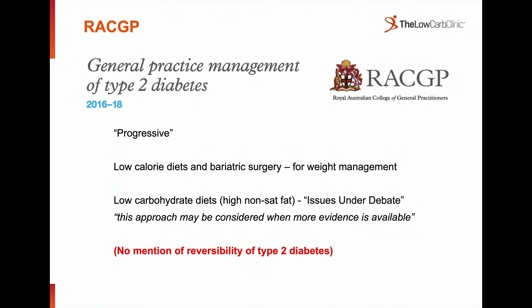The College of General Practitioners in 2018 put out guidelines for type 2 diabetes management. They similarly mentioned it was progressive. To their credit, they mentioned scope for weight management using low-calorie diets or bariatric surgery, but there was no mention of reversibility. They did say under 'issues under debate' that low-carbohydrate diets might be considered when more evidence is available — tucked at the very end — and they were still very much fearful of saturated fat.